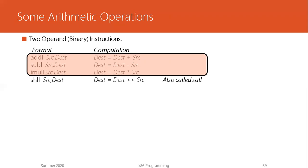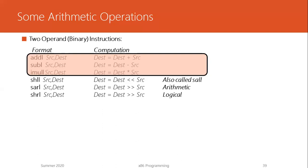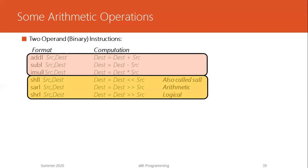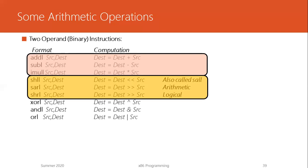The shift arithmetic right operation shifts to the right but preserves the sign bit through sign extension — the gap created by the shift is filled with whatever the sign bit (most significant bit) is. The shift logical right operation shifts to the right but does not sign-extend; instead it does zero extension, so the upper bits are zero-padded. Then we have the XOR operation, the AND operation, and the OR operation, each taking source and destination, performing the logical operation, and writing the result back into the destination.